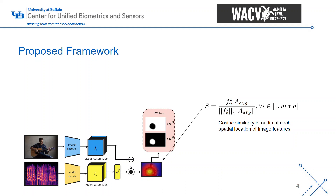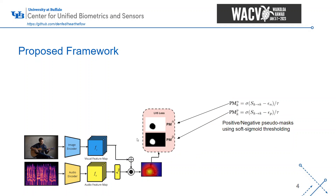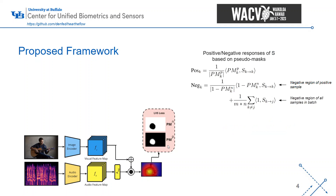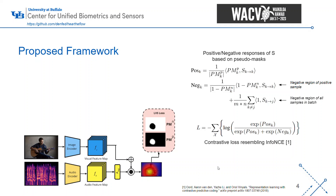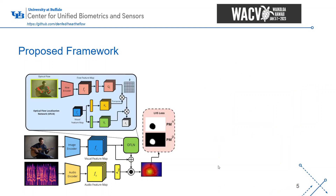This similarity measure becomes the heat map, where areas of high similarity are where we localize towards. To train this in a self-supervised fashion, we create positive and negative pseudo masks — essentially thresholding this heat map — and then we aggregate these positive and negative responses, very similar to what we see in many contrastive learning methods. We train this with a loss resembling InfoNCE, which is common in the self-supervised learning space.